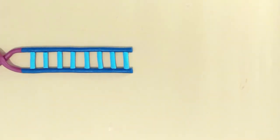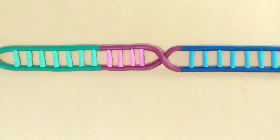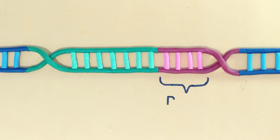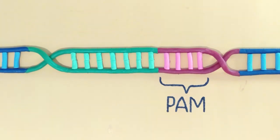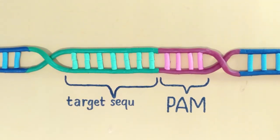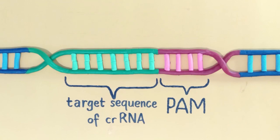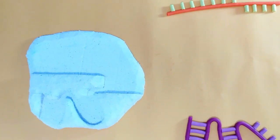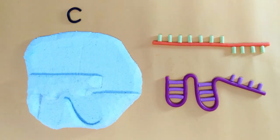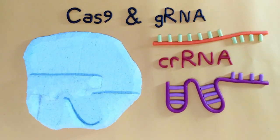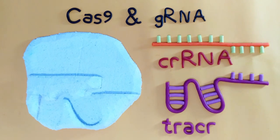PAM is a short sequence of two to six nucleotides that lies next to the target sequence of the CRRNA. A CRISPR-Cas9 complex is made of a Cas9 nuclease and the guide RNA consists of a CRRNA and a tracer RNA.